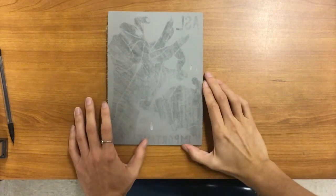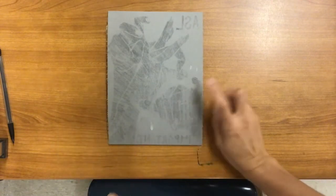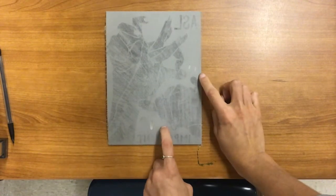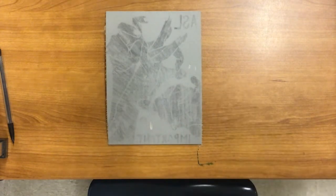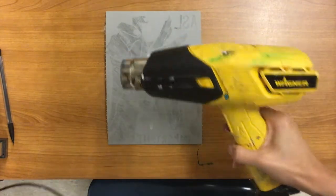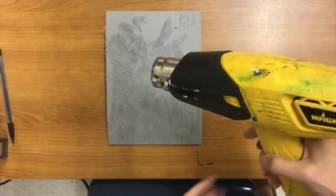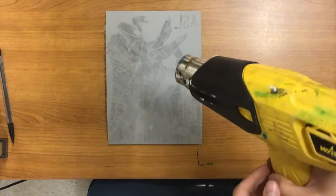Alright, so I'm going to show you how we're actually going to start carving our linocut. First, this linoleum is actually pretty tough, very hard, so we're going to take a heat gun which looks like this and we're actually going to blow some heat on this to soften that material.